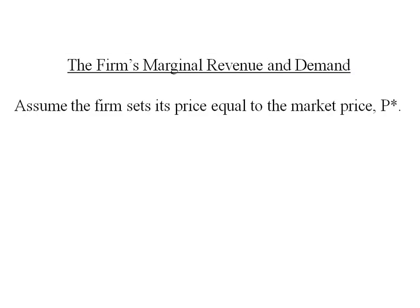Let's look at the firm's marginal revenue and demand. Since this is a perfectly competitive firm, they're going to be a price taker and they'll set their price equal to the market price, which we call P star. Total revenue for this firm will then be P star times Q, where Q is the amount of output that this firm produces and sells.